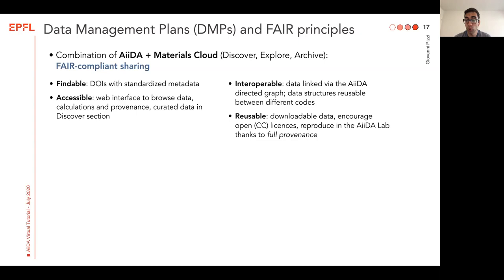Indeed, it is findable thanks to the DOIs and the standardized metadata of the Archive. It is accessible because you get very easily accessible web interfaces to browse your data, calculations, and provenance, which can also be created in the Discover section just in your browser without any need for specific technology. The data you produce is going to be interoperable, because data will be produced in the AIDA format, linked in the AIDA directed graph, and data structures will be reusable between different codes — for example, if you use a crystal structure in AIDA, you can relax it in Quantum ESPRESSO and then relax it again in VASP. Finally, the data is reusable because you can download it, we encourage open licenses like Creative Commons, and you can reproduce your research data thanks to the full provenance. It's not only reusable, but also reproducible thanks to AIDA.